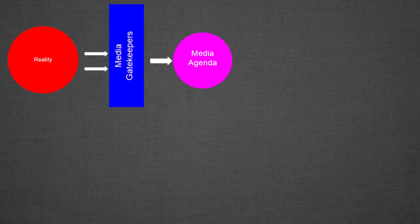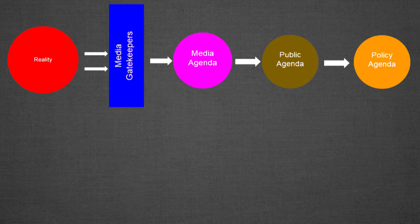This then goes into the media agenda. They go through framing — they set how they're going to present the stories, what facts they will put into it, what facts they'll omit — and then that turns into the public agenda. From the public agenda, people start discussing things, they talk about it, and that eventually turns into the policy agenda.